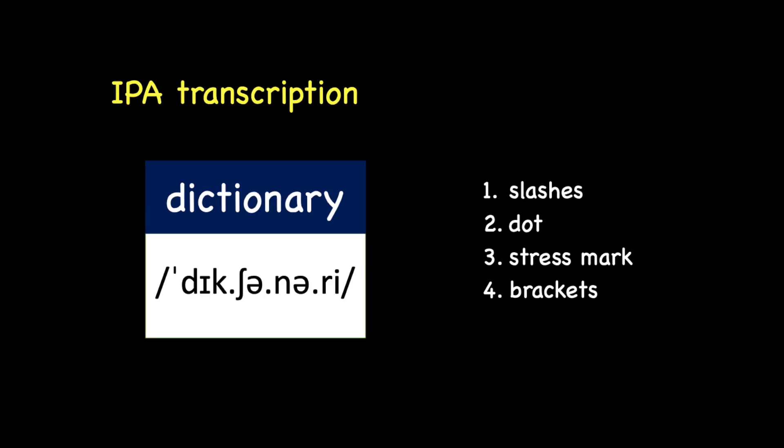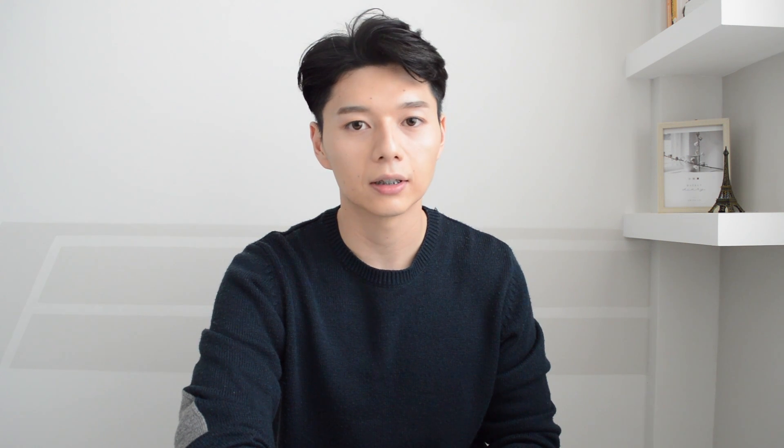In some cases, you will see brackets in the IPA transcription. It simply means optional — you can either pronounce the sound or ignore the sound. For example, the word s-h-i-r-t. You can pronounce it as 'shirt' or with the 'er' sound, 'shirt'.